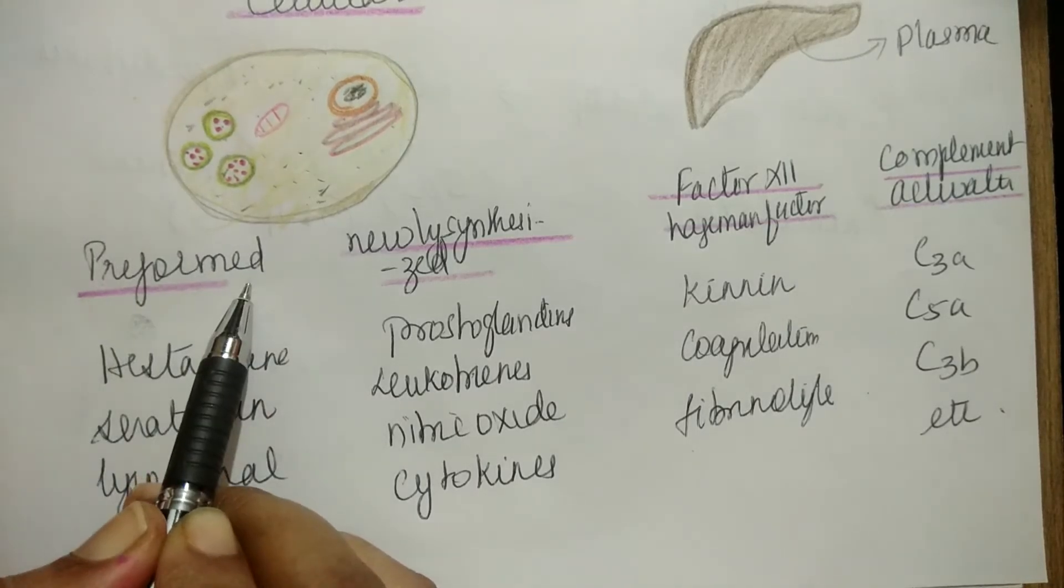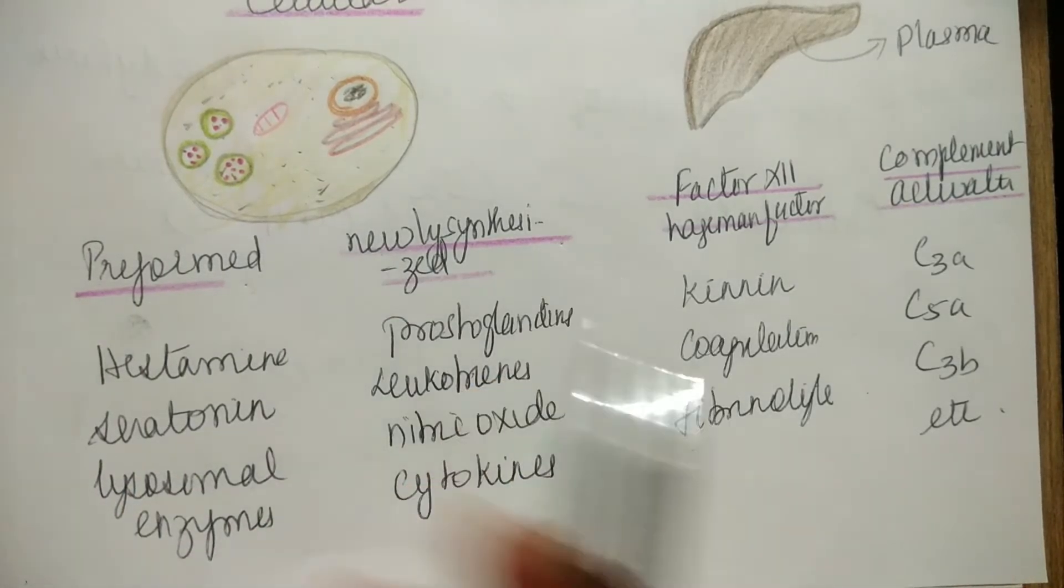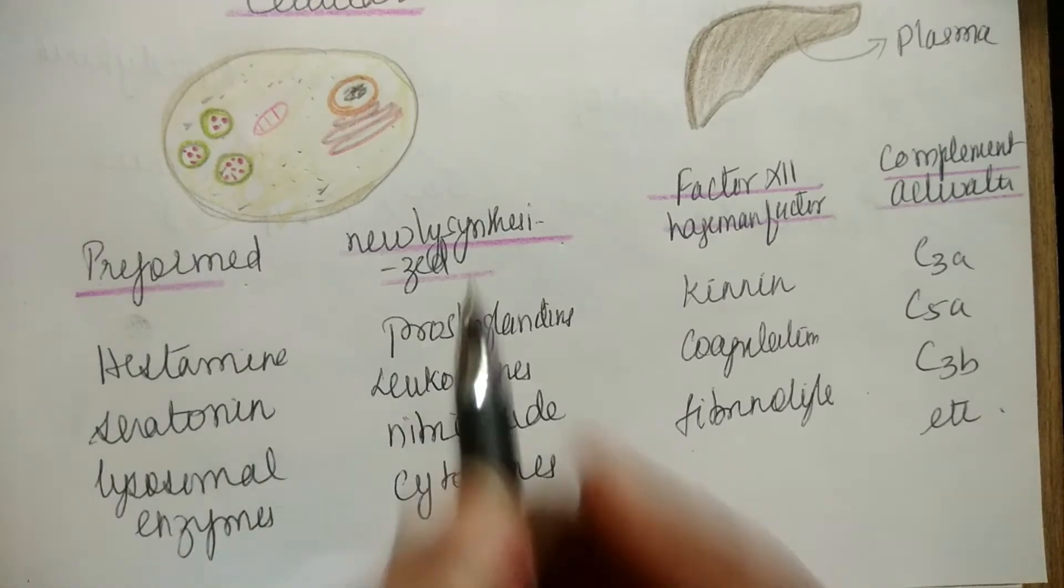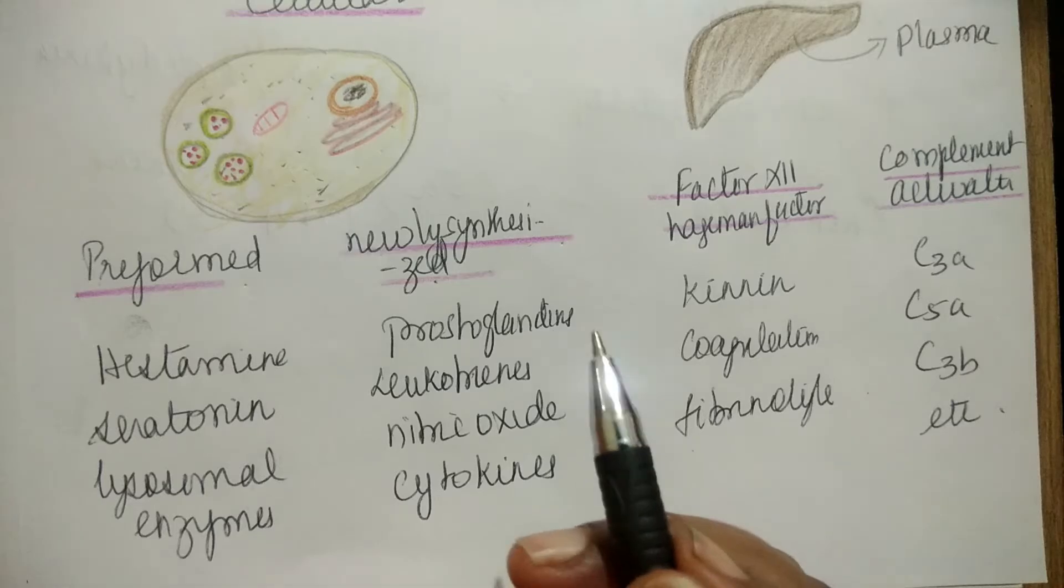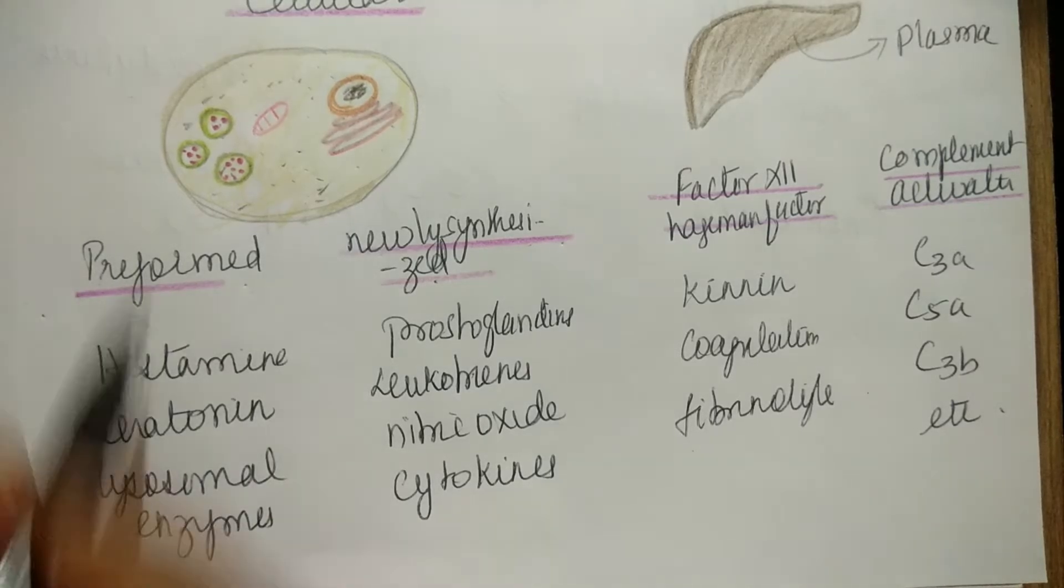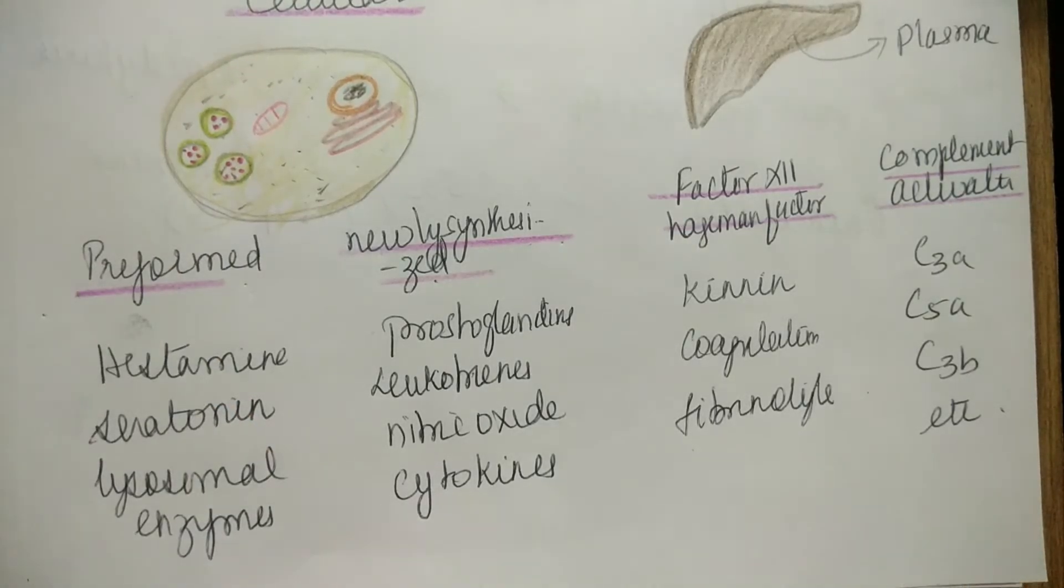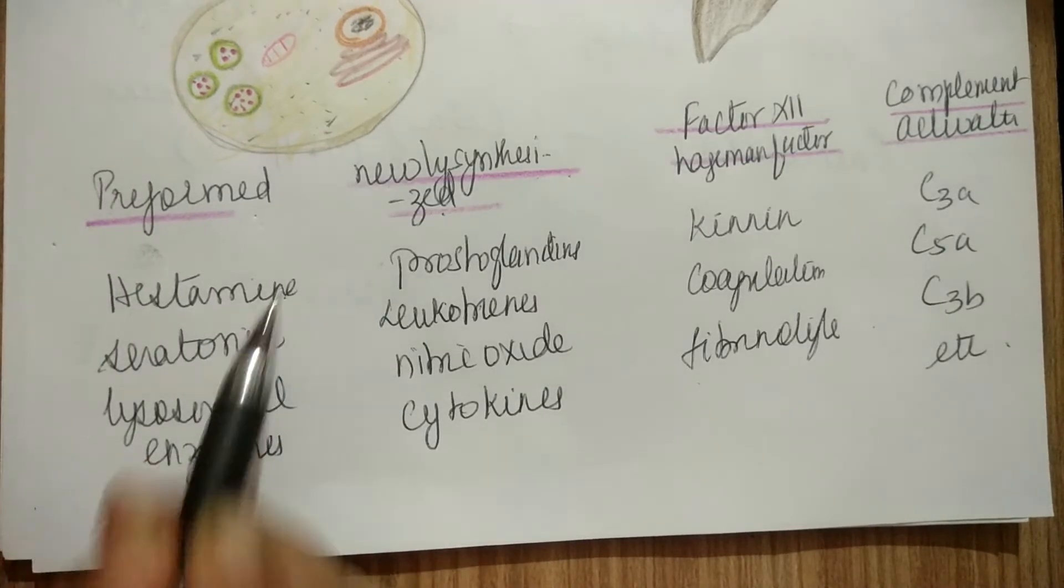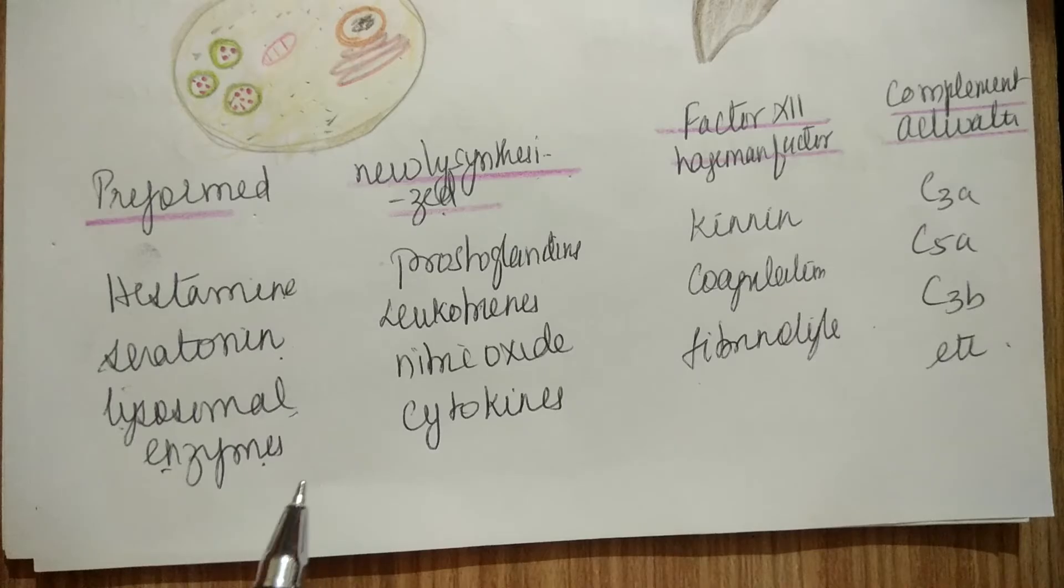Preformed and newly synthesized. Preformed means already synthesized in cells. Newly synthesized occurs during inflammation. Preformed chemical mediators include histamine, serotonin, and lysosomal enzymes.